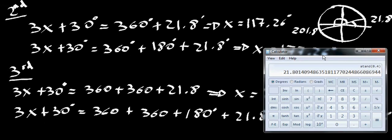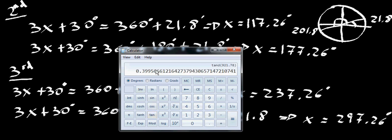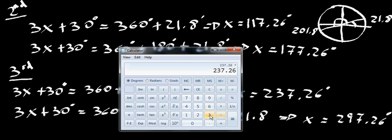For each of these values, we can verify with the calculator. Taking the last value, 297.26, we multiply by 3, add 30 degrees, and calculate the tan — that gives 0.4. There's some small rounding error. Doing the same for 237.26: times 3, plus 30, the tan of this is 0.4 as well. The same would happen with all the other values.